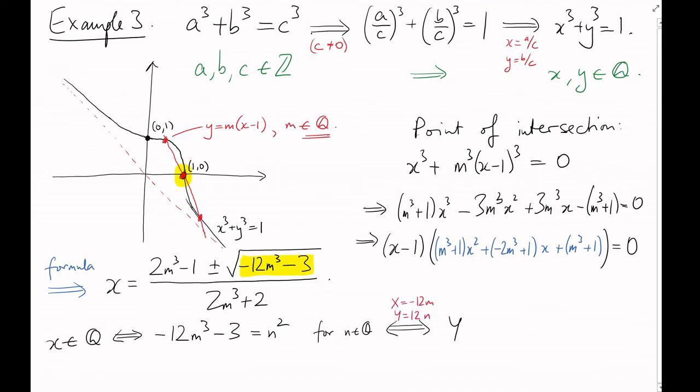After a quick change of variables, we can see that we're really just looking for a rational point on an elliptic curve, y squared equals x cubed minus 432. Cremona's tables now tell us not to expect any non-trivial solutions. Link to the table is in the description.